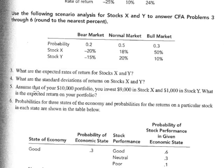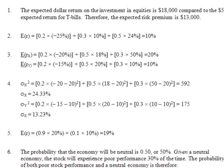Number five: assume that of your $10,000 portfolio, you invest $9,000 in stock X and $1,000 in stock Y. What is the expected return on your portfolio? The expected return for X is 20% and for Y is 10%. You invest 90% in stock X — 0.9 times 20 — plus 10% in stock Y — 0.1 times 10. The weighted average gives a portfolio return of 19%.